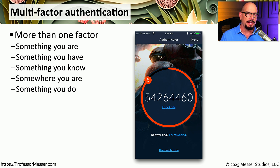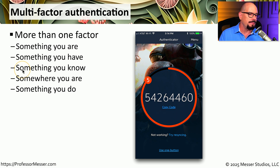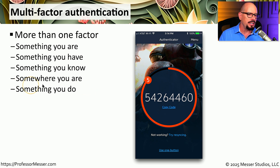You might be authenticating using a username, a password, and then some other type of authentication factor. If you're using multiple factors during the login process, we refer to that as multi-factor authentication. You might use something you are — a biometric like a fingerprint — or something you have, such as your mobile phone with an app that generates a login code. Another factor is something you know, most often a password or personal identification number. You could also use somewhere you are, with GPS or location services verifying you're inside a building or within a particular country. And very often we use something you do — if you've ever signed to receive a delivery, you've authenticated using something you do.